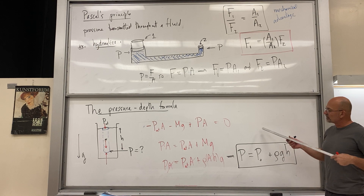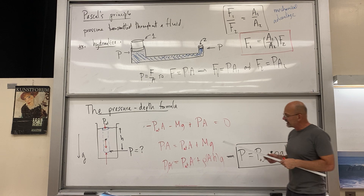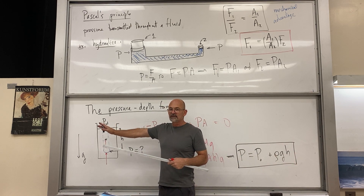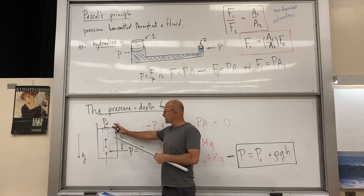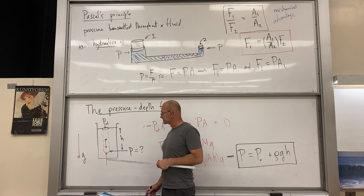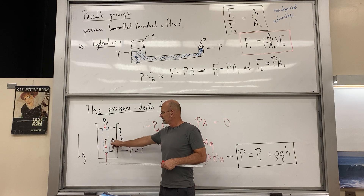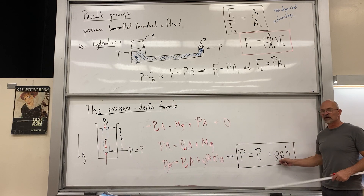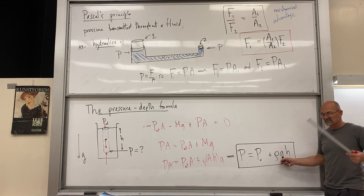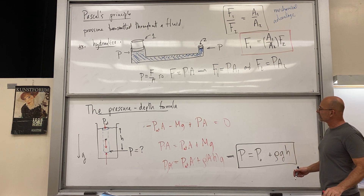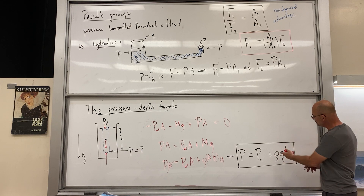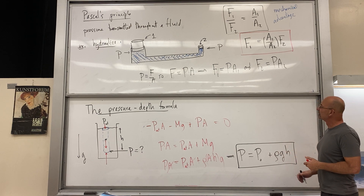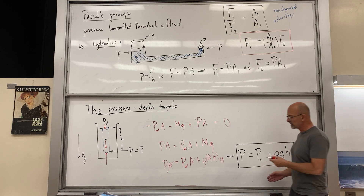This formula is P = P₀ + ρgh, where P₀ is whatever is pressing down on top (usually the atmosphere). If you were in free fall — like on a space shuttle — gravitational acceleration would be zero and there'd be no pressure difference. The pressure depends on g, density, and depth.